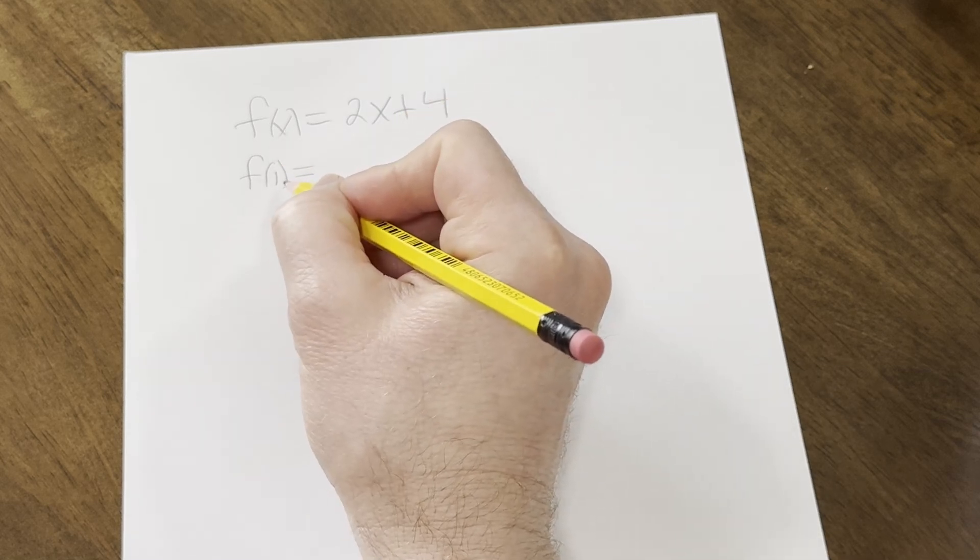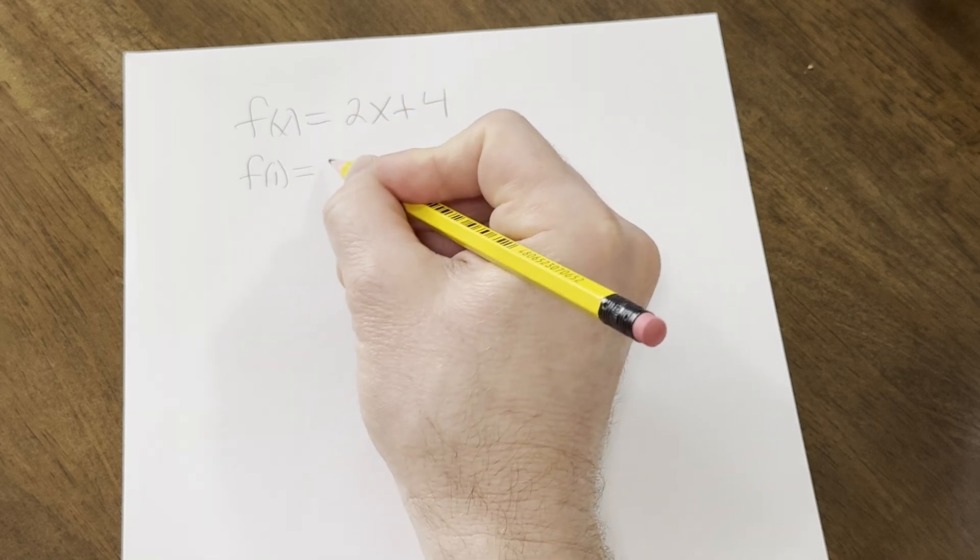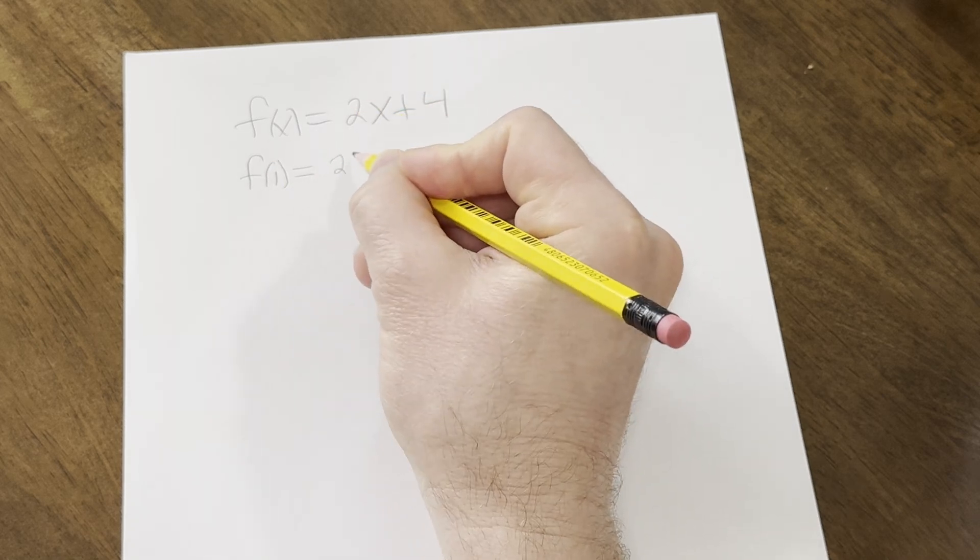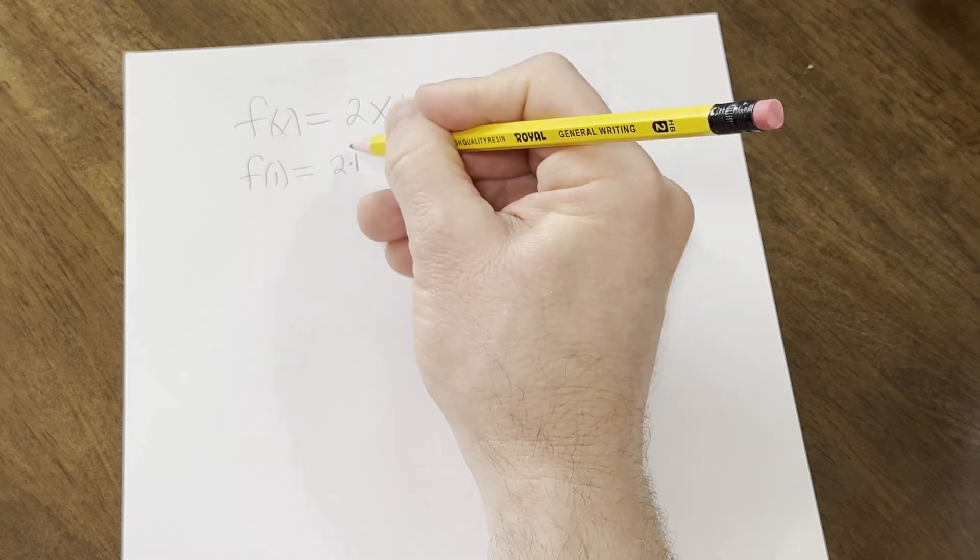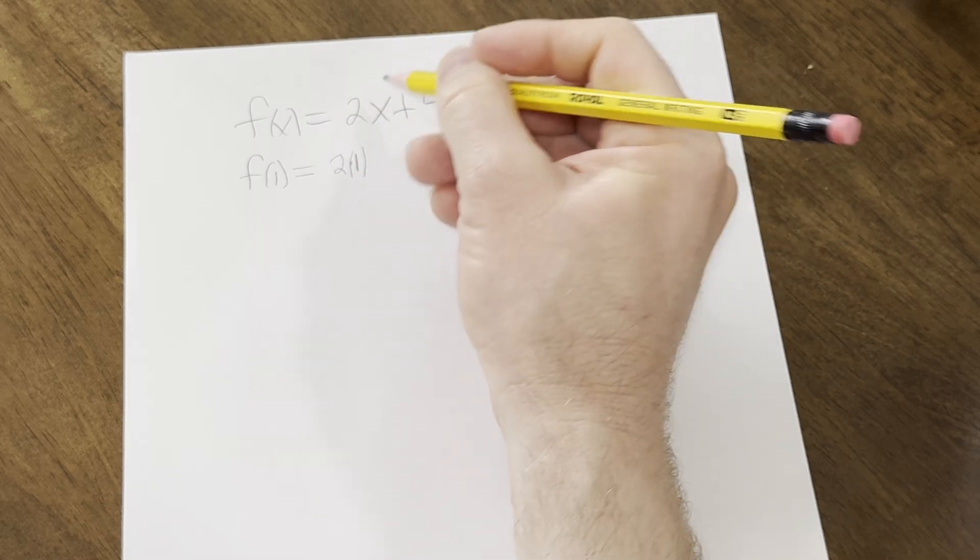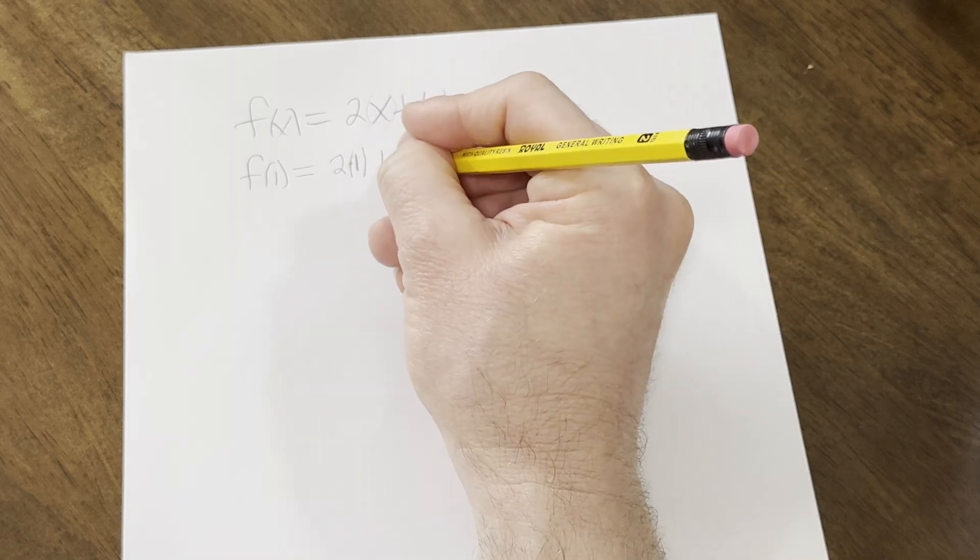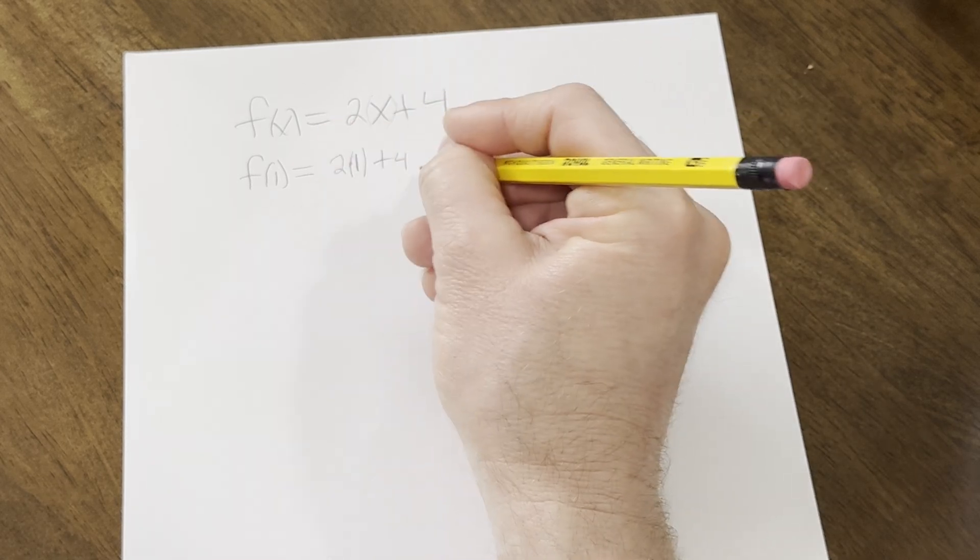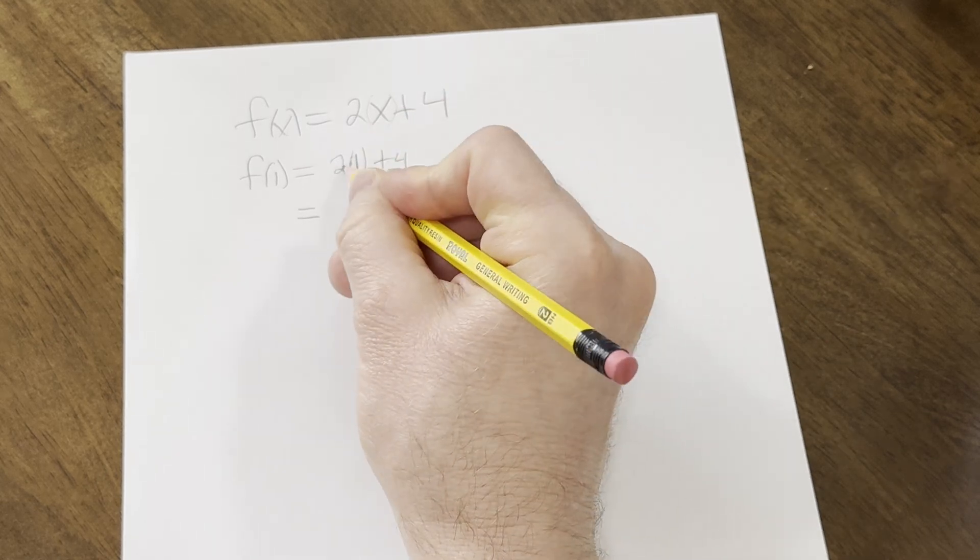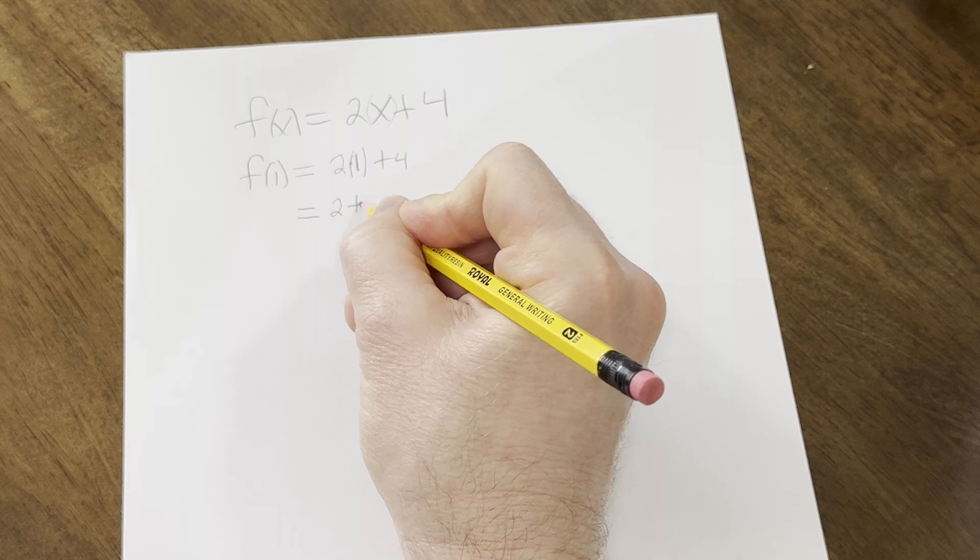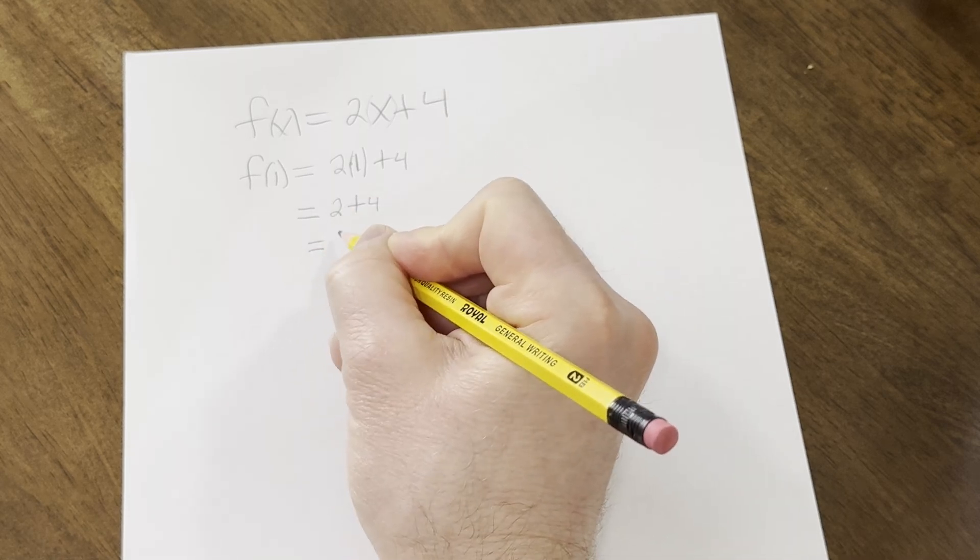So all you do for this is they basically want you to put the 1 where the x is. So you just write everything down. So 2, and then instead of x, you write 1. You can put a times and a 1 like this if you want, or you can put a parentheses. There's really a parentheses here, but you don't have to write it. And then plus 4. But then you have to go to the next line. So you do equals. And then 2 times 1 is 2. And then you still have the 4. So then you do equals. And then 2 plus 4 is 6.